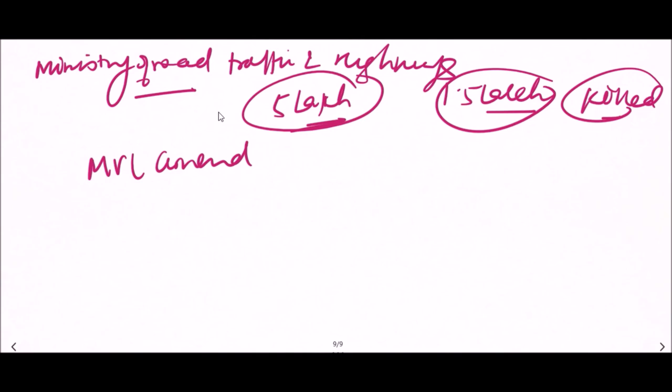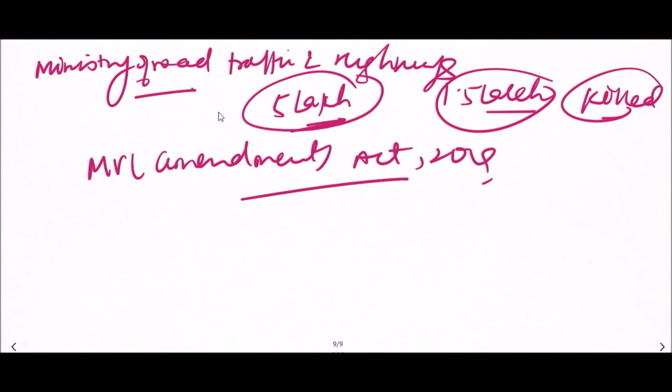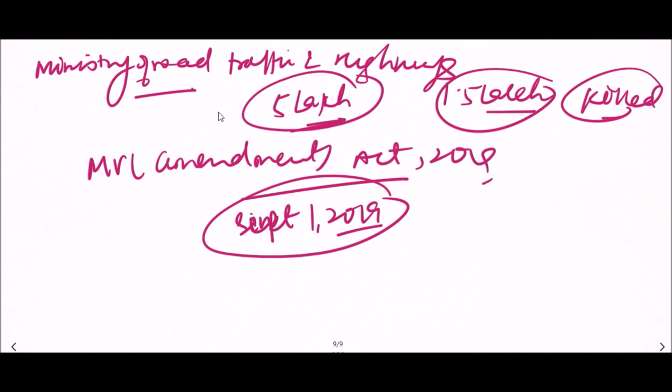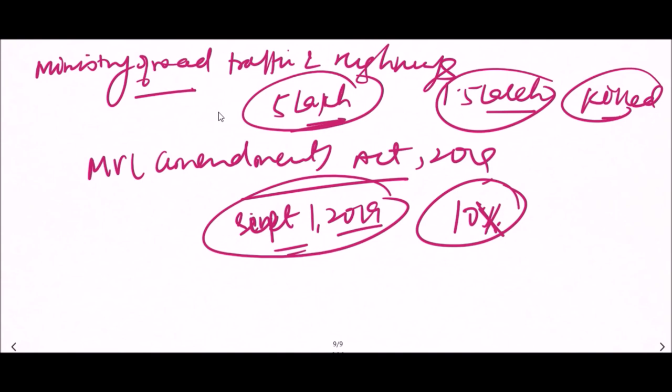The Motor Vehicle Amendment Act 2019 was implemented throughout the country since September 1st, 2019. Various penalties have been increased 10 times — for not wearing seat belts, over-speeding, and other violations. Section 194 of the MVA Act imposes a fine of rupees one thousand for not wearing seat belts.